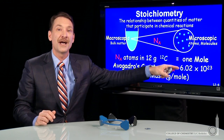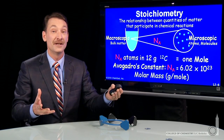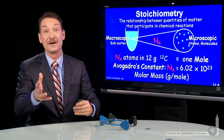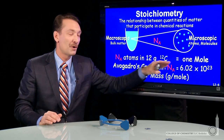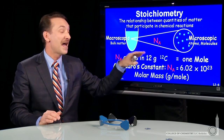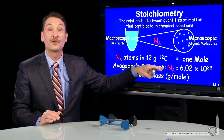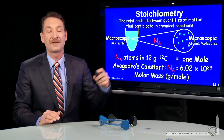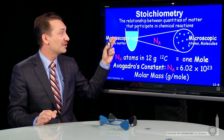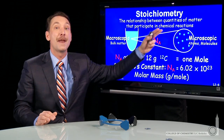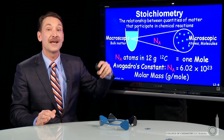So 6.02 times 10 to the 23rd particles of anything — carbon, hydrogen, oxygen — will be a mole of that thing. A mole of carbon-12 particles is 6.02 times 10 to the 23rd, and that has a mass of 12 grams, or 12 grams per mole of carbon. That's how we're going to make the connection between macroscopic properties and microscopic properties — we're going to use Avogadro's constant and our concept of the mole.